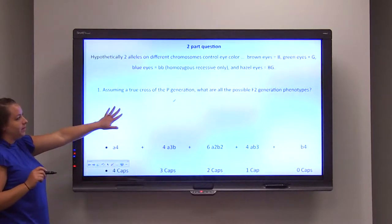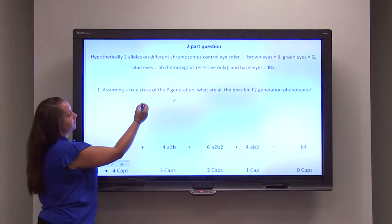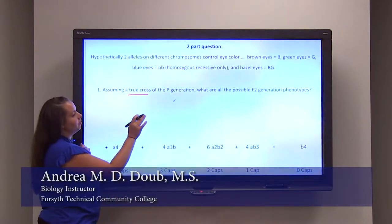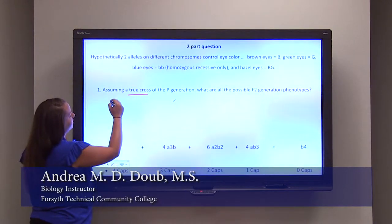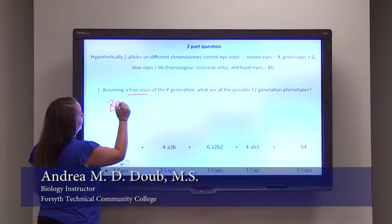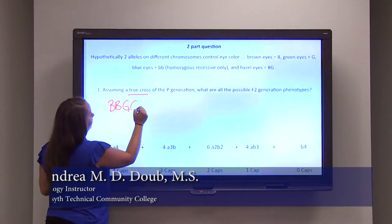So assuming the true cross is a P generation, remember true cross means that you're going to have homozygous dominant and homozygous recessive. All homozygous dominant would be big B, big B, big G, big G.